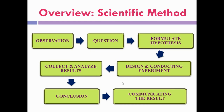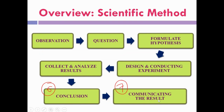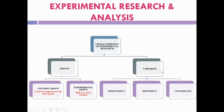There are seven steps: observation, question, formulate hypothesis, design and conduct the experiment, collect and analyse the results, conclusion, and communicating the results. Before you design and conduct the experiment, you should know the basic and important characteristics of experimental research: comparison of groups and variables.